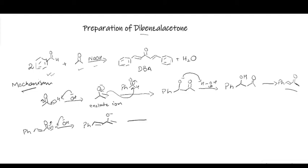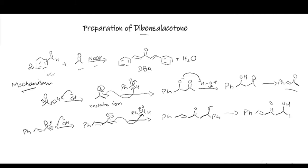The hydroxide will again react with the alpha hydrogen to form another enolate. This enolate will again react with another benzaldehyde — since we used acetone and benzaldehyde in a 1:2 ratio, we have more molecules of benzaldehyde available. Again we will have the formation of an oxyanion, which will be converted into an alcohol first, just like the previous step, and then after dehydration it will be converted into the final product — dibenzyl acetone, or DPA.